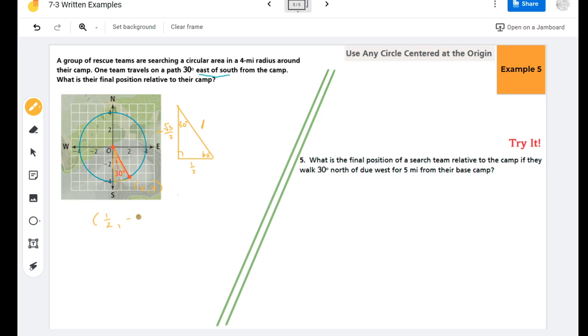Now to scale this up from being a unit circle to being a four mile radius circle, I'm going to take this ordered pair and multiply it times four. So half of four is two, and four times root three over two is negative two root three.